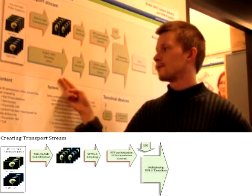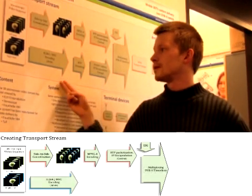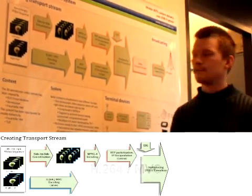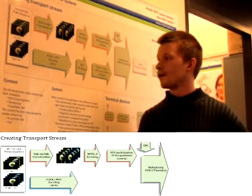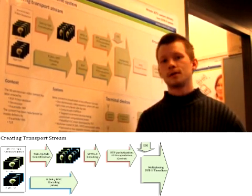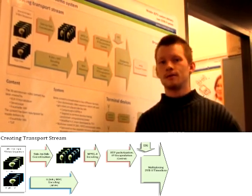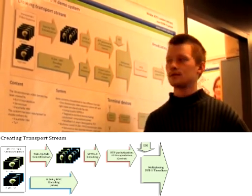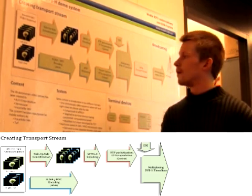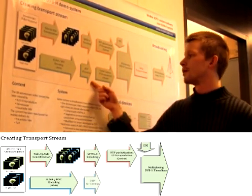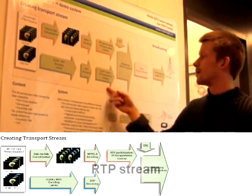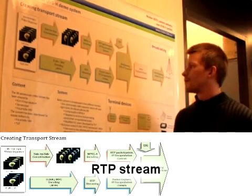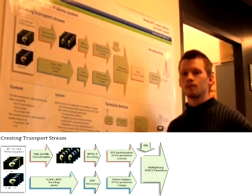The second format is MVC — a multi-view codec which exploits the inter-view dependencies to get a better compression ratio. We also encapsulate that in RTP packets and then in the transport stream.